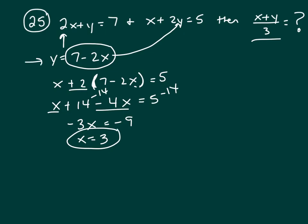x is 3, and here's an expression for y. y equals 7 minus 2 times x, and we know x is 3. That's 7 minus 6. y equals 1.